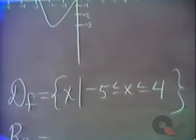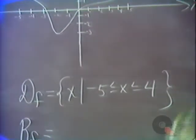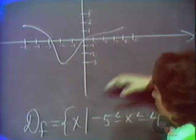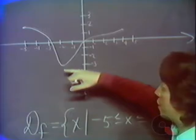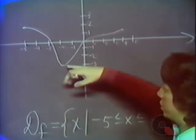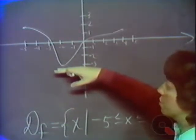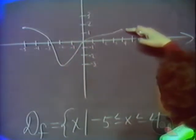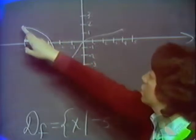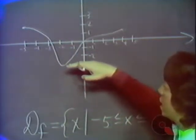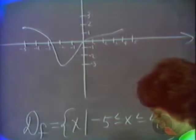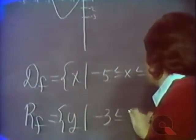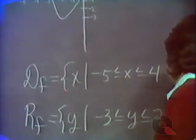The range is the set of y values that you get out when you substitute in these x values. We look to see which y values are covered by the function. The smallest y value for which there's a point on the curve is y equals minus 3. The highest y value covered goes up to 2 over here. So the y values run from minus 3 to 2, and we write down for the range: all y values between minus 3 and 2.